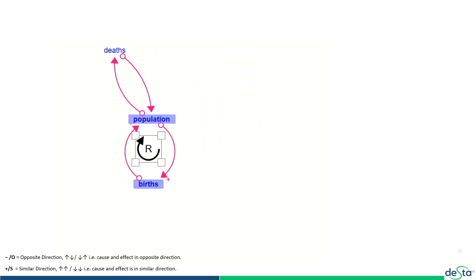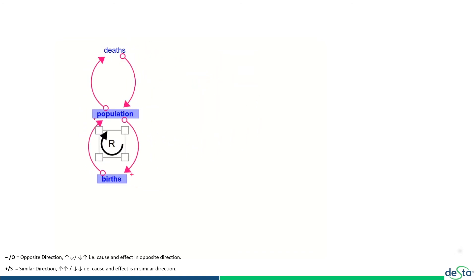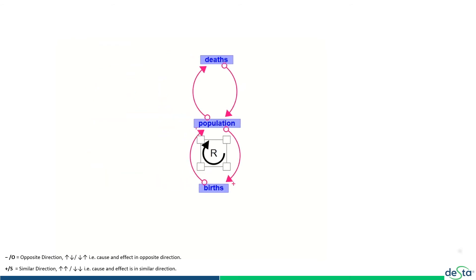Is signified through a negative polarity. You can use a minus symbol here or you can use an O symbol. O stands for opposite relationship, which means if one variable goes up the other goes down. If one variable goes down the other goes up. It is inversely related. You can use a minus or O.